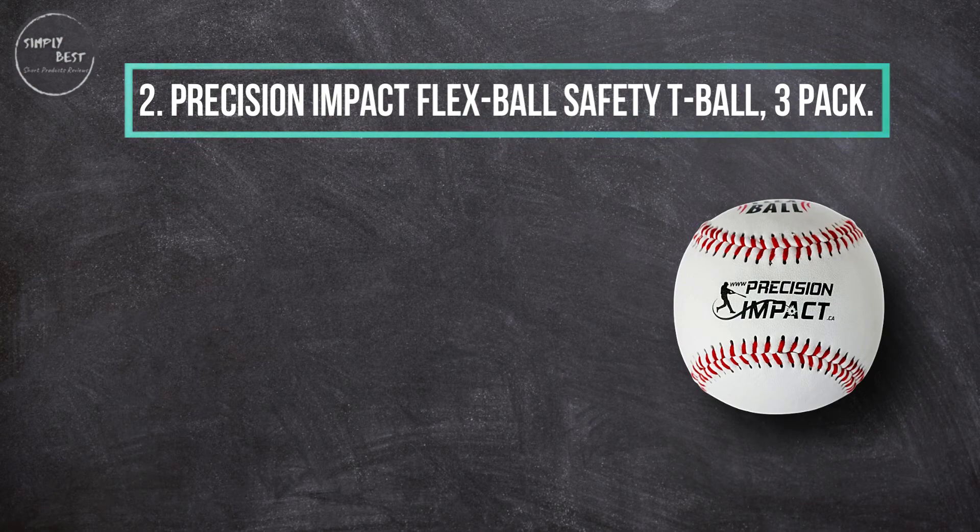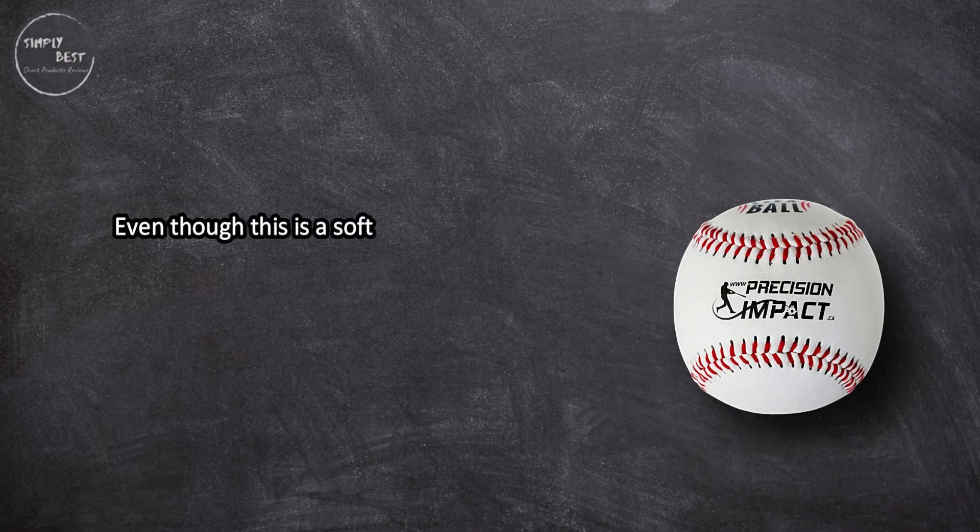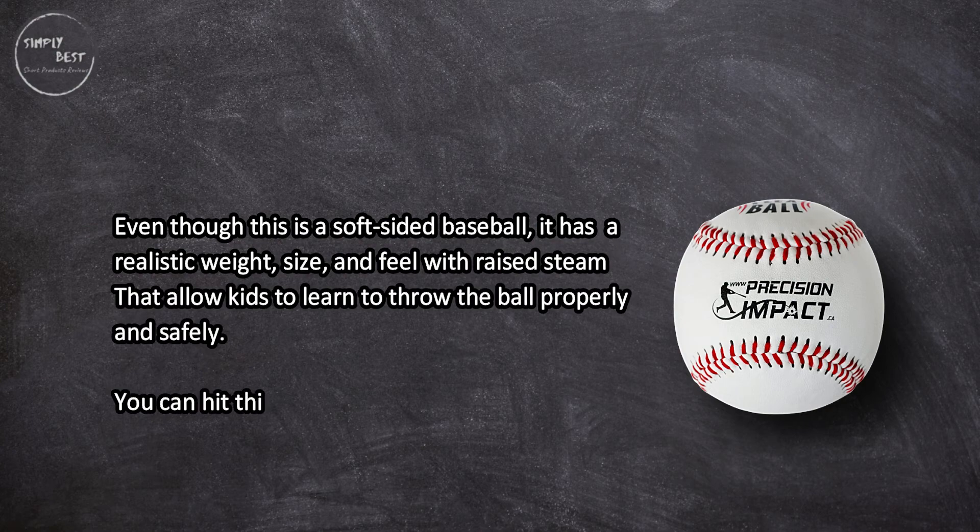At number two, Precision Impact Flex-Ball Safety T-Ball three-pack. Even though this is a soft-sided baseball, it has a realistic weight, size, and feel with raised seams that allow kids to learn to throw the ball properly and safely. You can hit this ball just as you would a standard baseball.